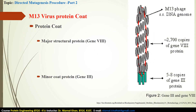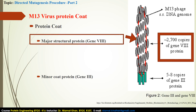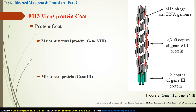Like other protein-coated viruses, the M13 genome is encapsulated by protein coats. The protein coat is made of two different types of proteins encoded by two different genes. The gene 8 protein, known as the major coat protein, forms a cylindrical array of approximately 2700 identical subunits surrounding the viral genome. Approximately 5 to 8 copies of the gene 3 protein, known as minor coat proteins, are located at the end of the filamentous phage and allow binding to bacterial sex pili during infection.